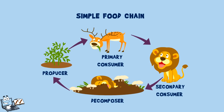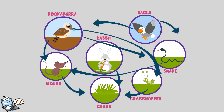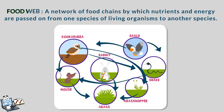A food chain is a simple version of what actually happens in nature, but everything is not so simple. In this chart, grass can be eaten by both rabbit and grasshopper, and a mouse can be eaten by both the snake and the kookaburras. The snake can also be eaten by the eagle and kookaburras. A food web is a network of food chains by which nutrients and energy are passed on from one species of living organisms to another species.